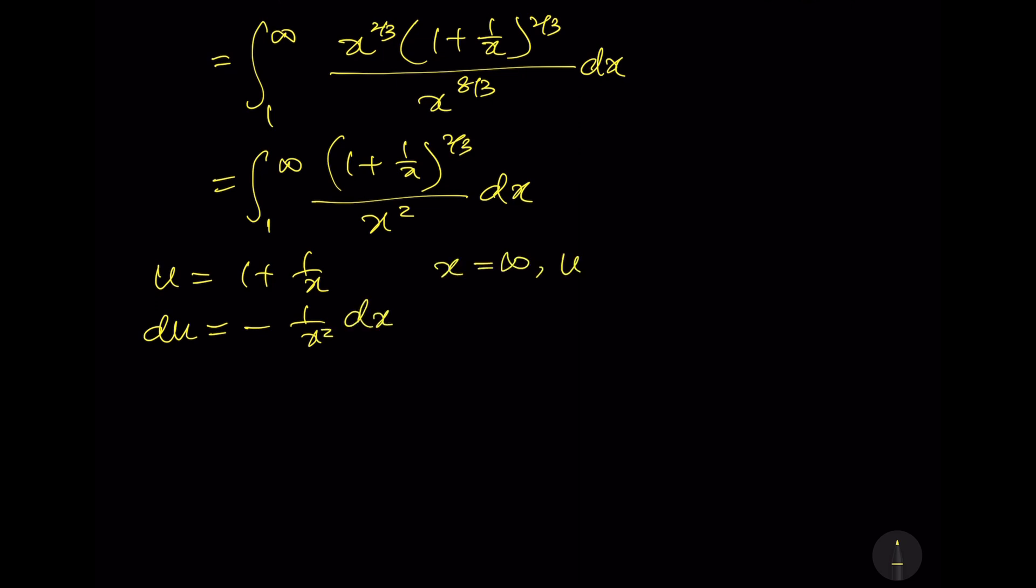When x equals to infinity, u equals to 1 plus 0, which is equal to 1. When x equals to 1, u is equal to 1 plus 1, equals to 2. Now we have the integral from 2 to 1 of negative u power 2 over 3 du.